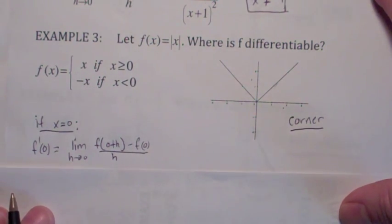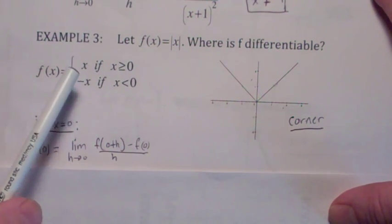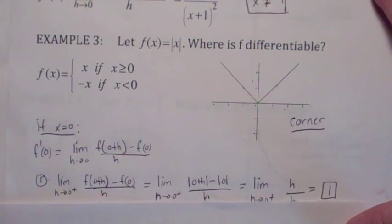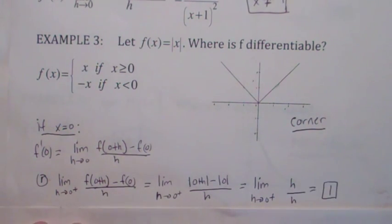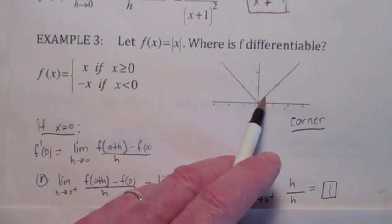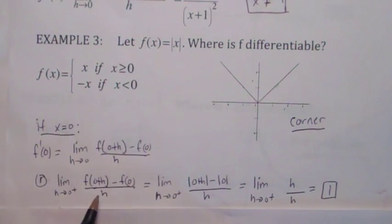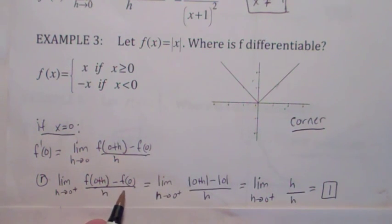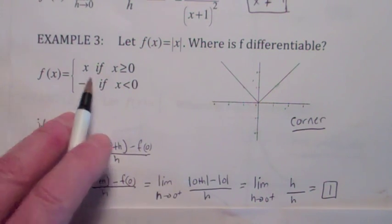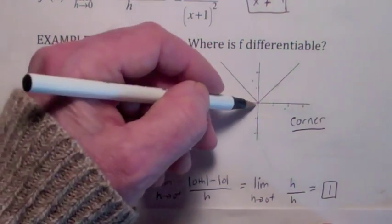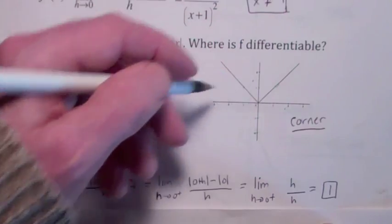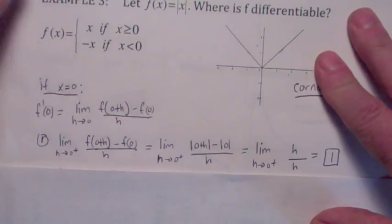Since this is a piecewise function, let's break it up into cases and look at each case separately. If we approach 0 from the right, and h is some positive number, then the limit as h goes to 0 from the right of [f(0+h) - f(0)] / h — isn't the absolute value of h equal to h if h is positive? So the derivative from the right is 1, which isn't too surprising. If you have 0 here and h here, the slope of the secant line is 1, so therefore so is the slope of the tangent line.